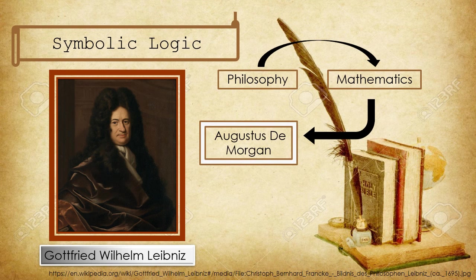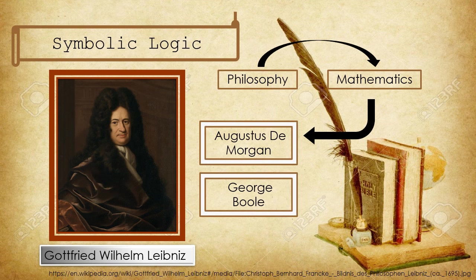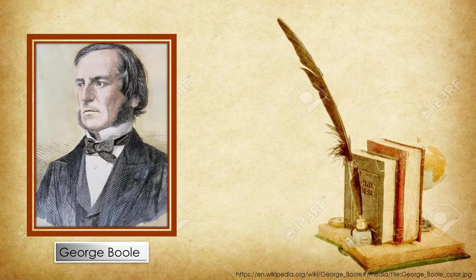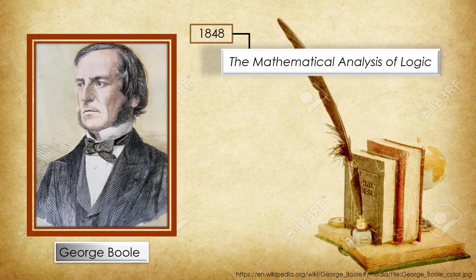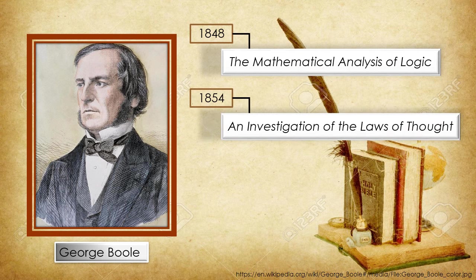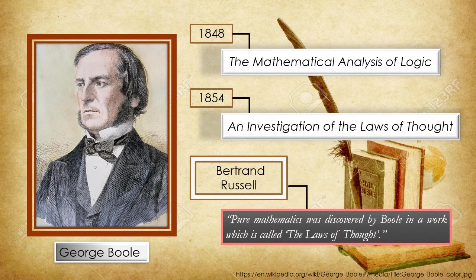Some of them are Augustus de Morgan and George Boole. George Boole was known for his great contributions in this field through his book, The Mathematical Analysis of Logic, which was published in 1848. In this book, he argued persuasively that logic should be allied with mathematics and not philosophy. Following this is another book, An Investigation of the Laws of Thought, which was published in 1854. The mathematician Bertrand Russell stated that pure mathematics was discovered by Boole in his work called The Laws of Thought.